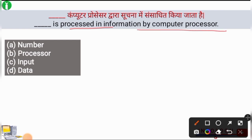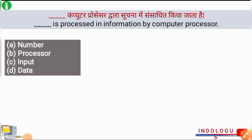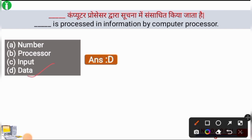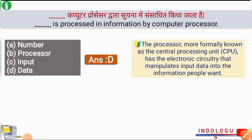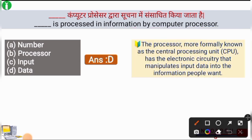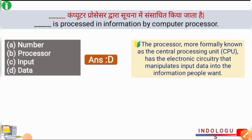The right answer is option D, data. Data is processed into information by the computer processor. The processor, more formally known as the Central Processing Unit or CPU, has the electronic circuitry that manipulates input data into the information that people want.